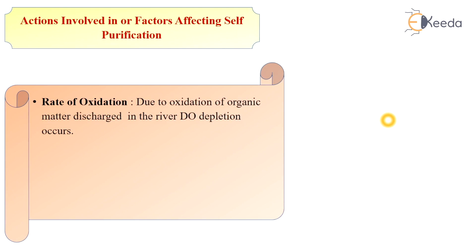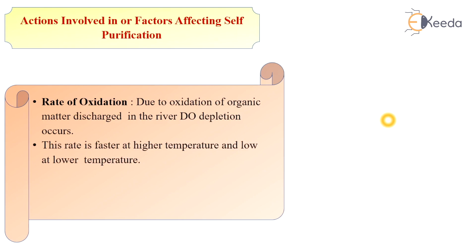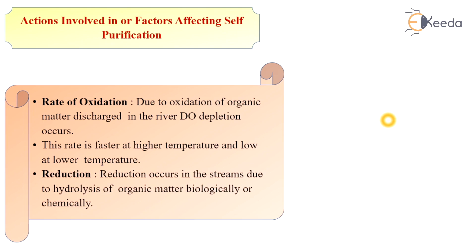The next factor is the rate of oxidation. Due to oxidation of organic matter discharged in the river, dissolved oxygen depletion occurs. This rate is faster at higher temperature and lower at lower temperature. The next factor is reduction, which occurs in the stream due to hydrolysis of organic matter, biologically or chemically.